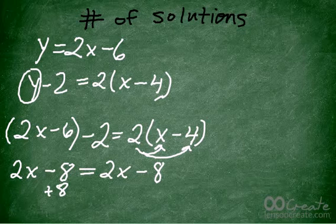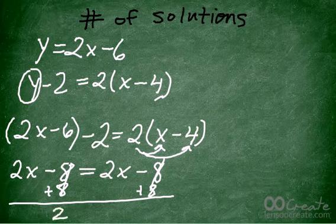So then I add 8 on both sides, those cancel out, and those cancel out, so I'm left with just 2x equals 2x.